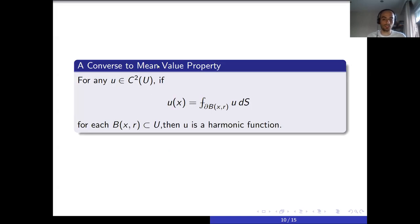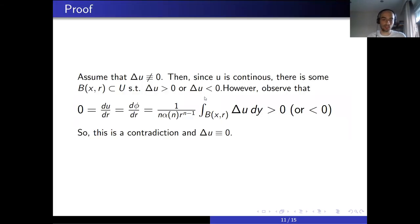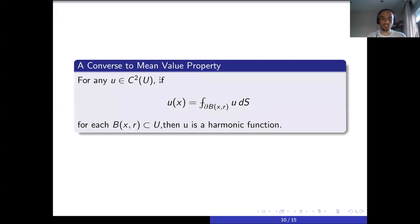Interestingly, there is also a converse to this property. If you have any twice continuously differentiable function in C² that satisfies this equality for each ball contained in capital Ω, then U is harmonic. Again, this is a simple proof. Assume that U is not harmonic, and consequently Δu is not identically zero.